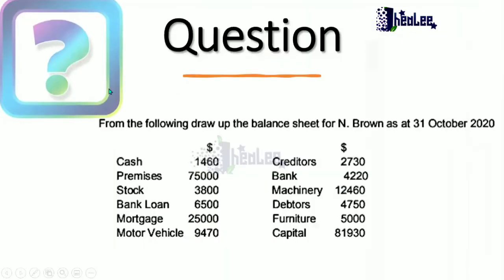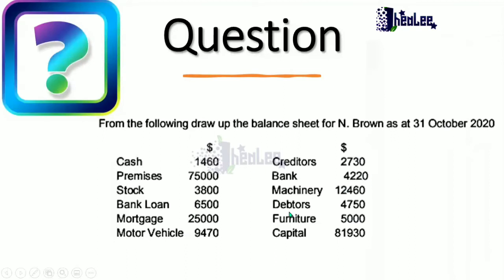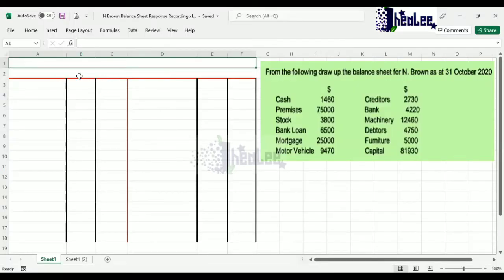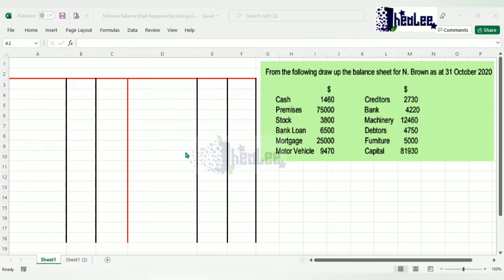Now we're going to look at a question where you're presented with a list of balances and asked to prepare the balance sheet for N. Brown as at 31st of October 2020. Remember the horizontal balance sheet has a T that separates the left-hand side from the right-hand side — assets are listed on the left while capital and liabilities are listed on the right.